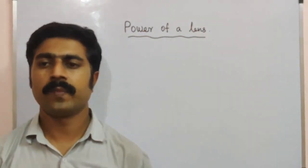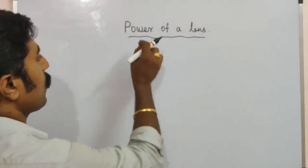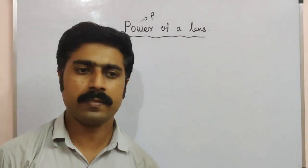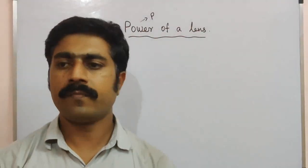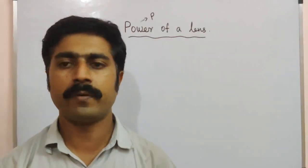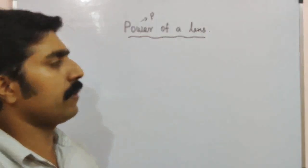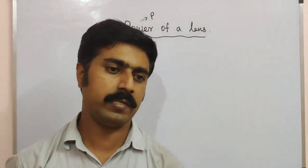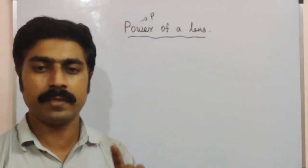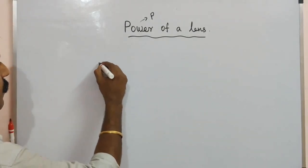Hi students. Today's popular topic is the power of a lens. The power of a lens is denoted by the letter P. Note that in electricity, the same letter P is used for electric power, but the unit is different. The unit of power of a lens is the Diopter, and its symbol is capital D.